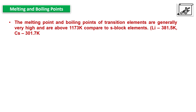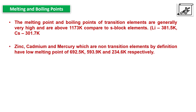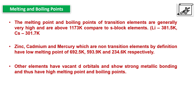The melting and boiling points of transition elements are generally very high and are above 1173 Kelvin, compared to those of s-block elements which are in the range of 300 to 400 Kelvin. Zinc, cadmium, and mercury are actually non-transition elements because their d orbital or n-1 shell is completely filled, and they have low melting points. Apart from these three elements, other elements have vacant d orbitals and unpaired electrons, so they show strong metallic bonding and thus have high melting and boiling points.